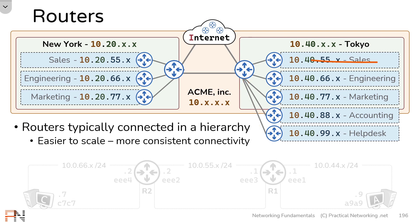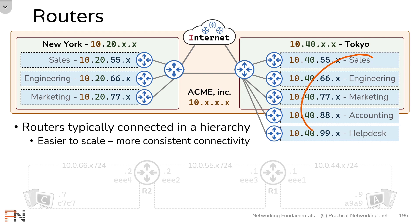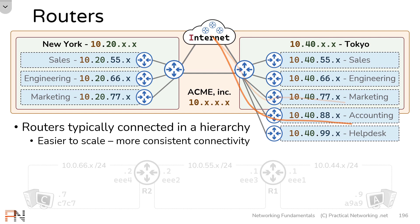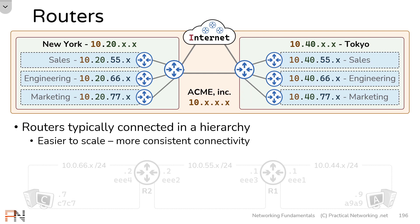If something were to occur to the marketing router here, no matter what, the accounting network and the helpdesk network are unaffected. Plus for the sales team to speak to engineering we have to cross three routers, or for the sales team to speak to the helpdesk you still have to cross only three routers. And of course in all cases for any of these teams to speak to the internet they just have to cross two routers. This makes for a much more consistent connectivity experience for the users in your network. So those are some reasons why you want to deploy routers in a hierarchy.